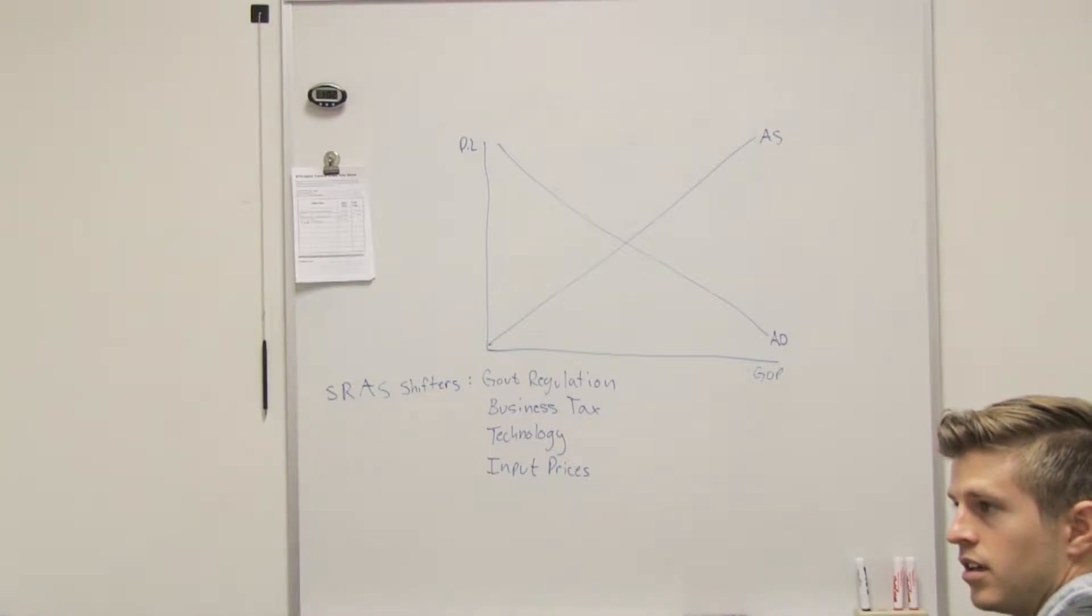If taxes are lowered, then businesses will produce more, right, which means supply will become greater. I guess I'm just confused about what that looks like on the graph. I get what difference it makes.